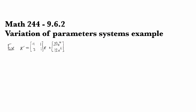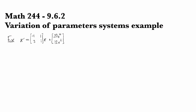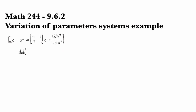Let's do an example of variation of parameters for a system. Here's the system we're going to solve. We begin by finding the complementary solution, which involves finding the eigenvalues and eigenvectors.